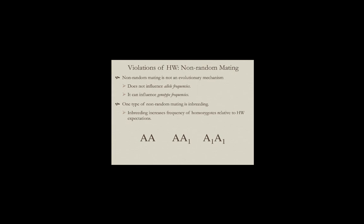I'm going to focus on one specific type of non-random mating called inbreeding. Inbreeding increases the frequency of homozygotes relative to what would be expected from Hardy-Weinberg expectations. In a two-allele system, we see an increase in homozygous AA and A1 individuals, and an under-representation of heterozygotes compared to Hardy-Weinberg expectations.